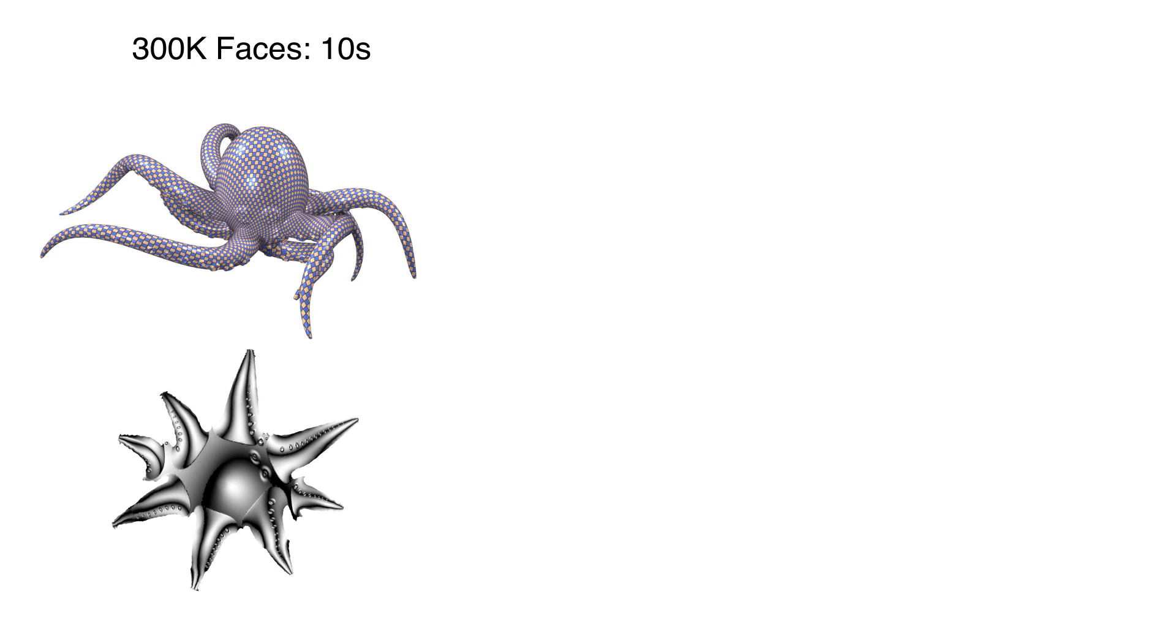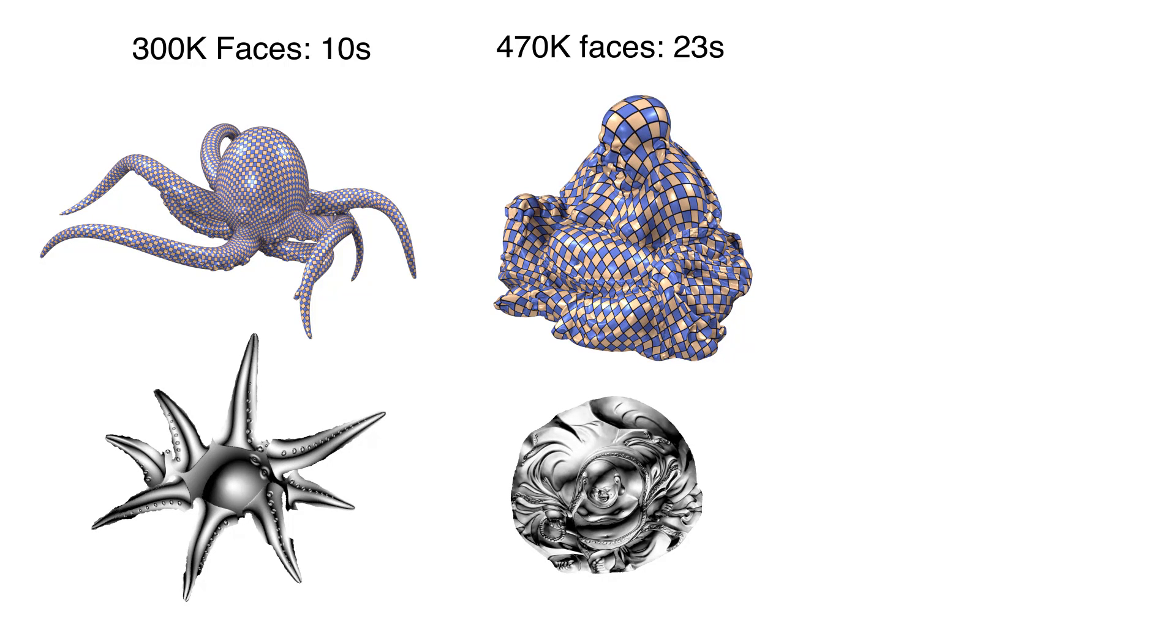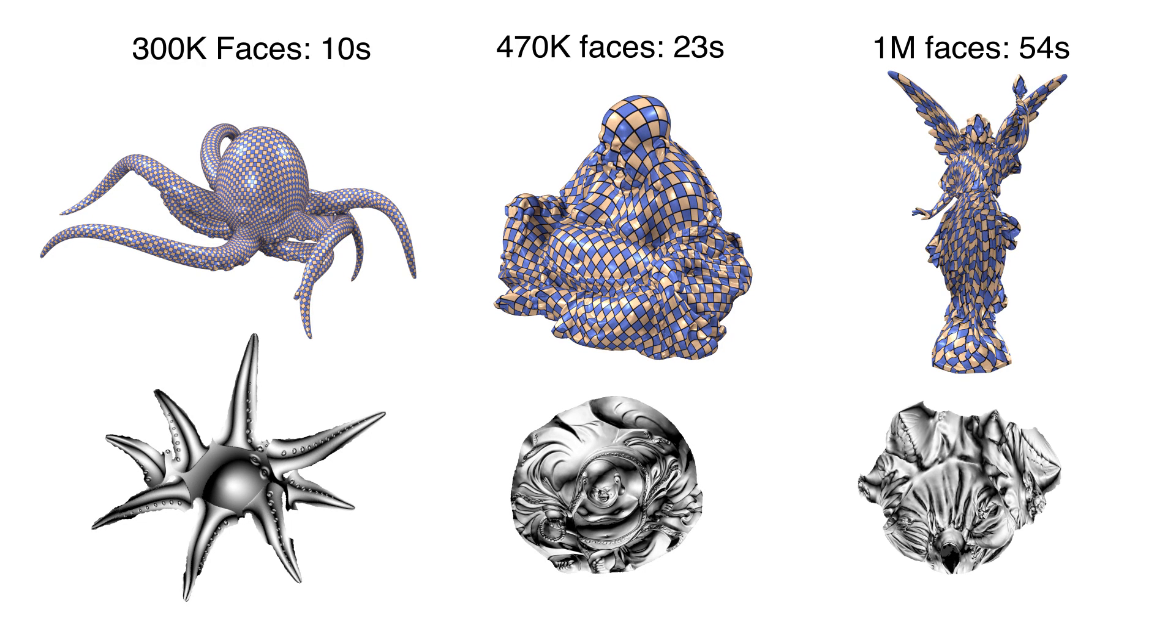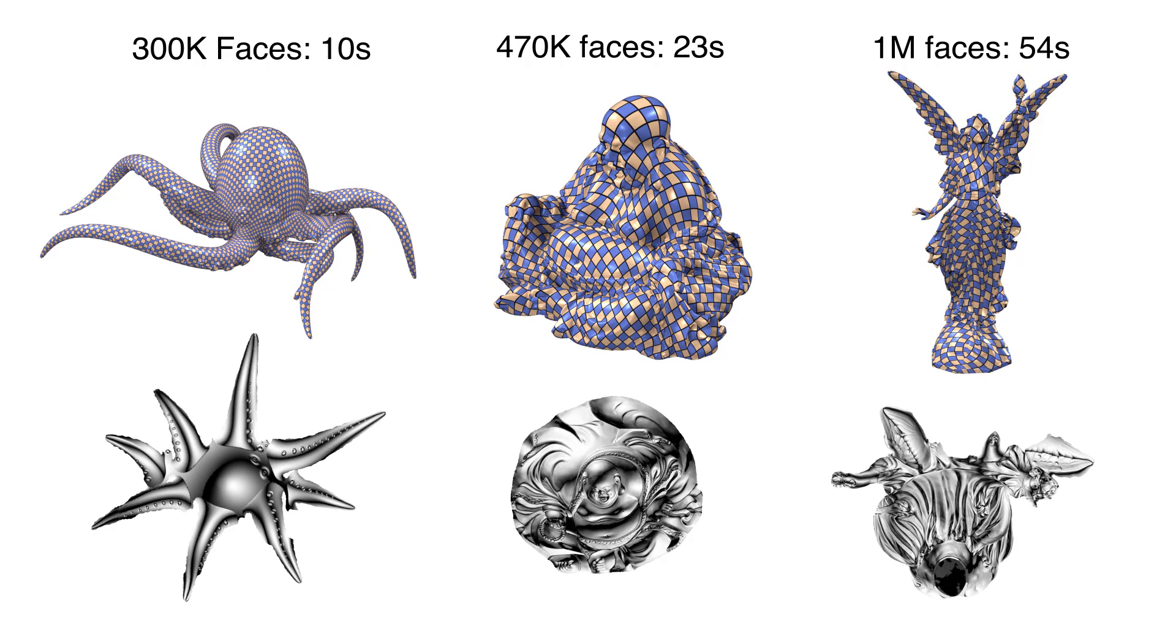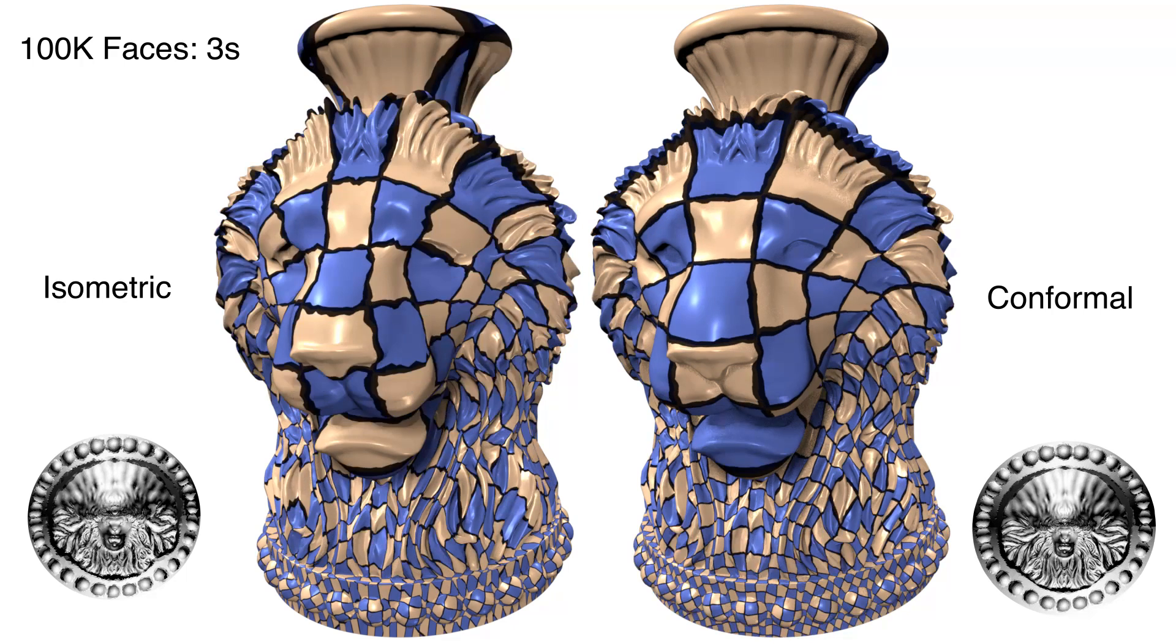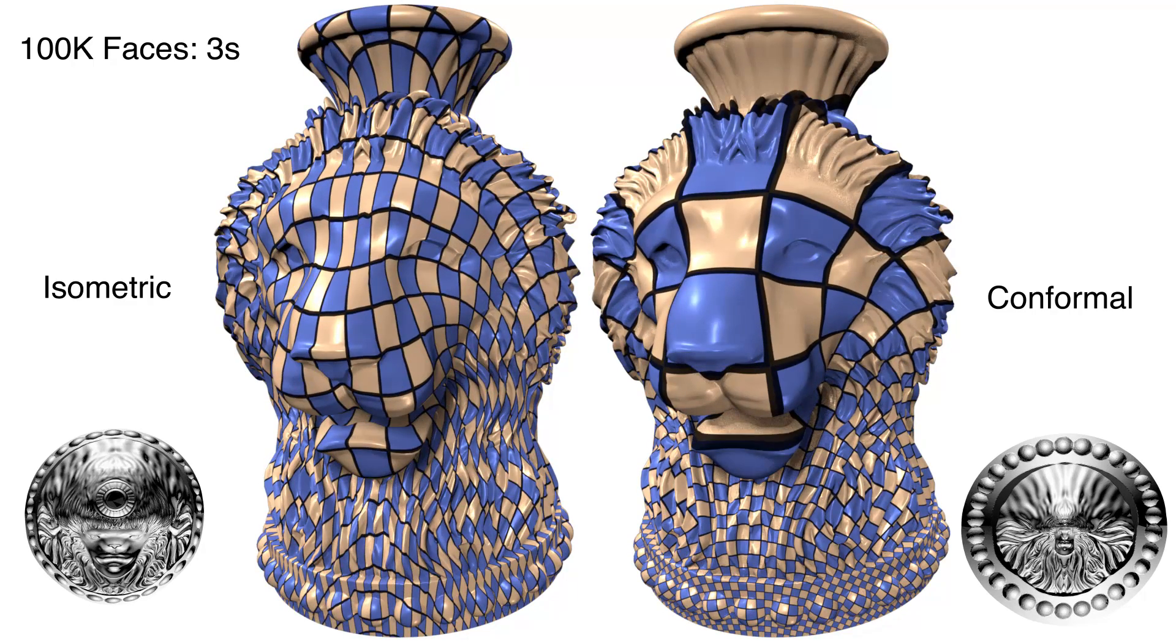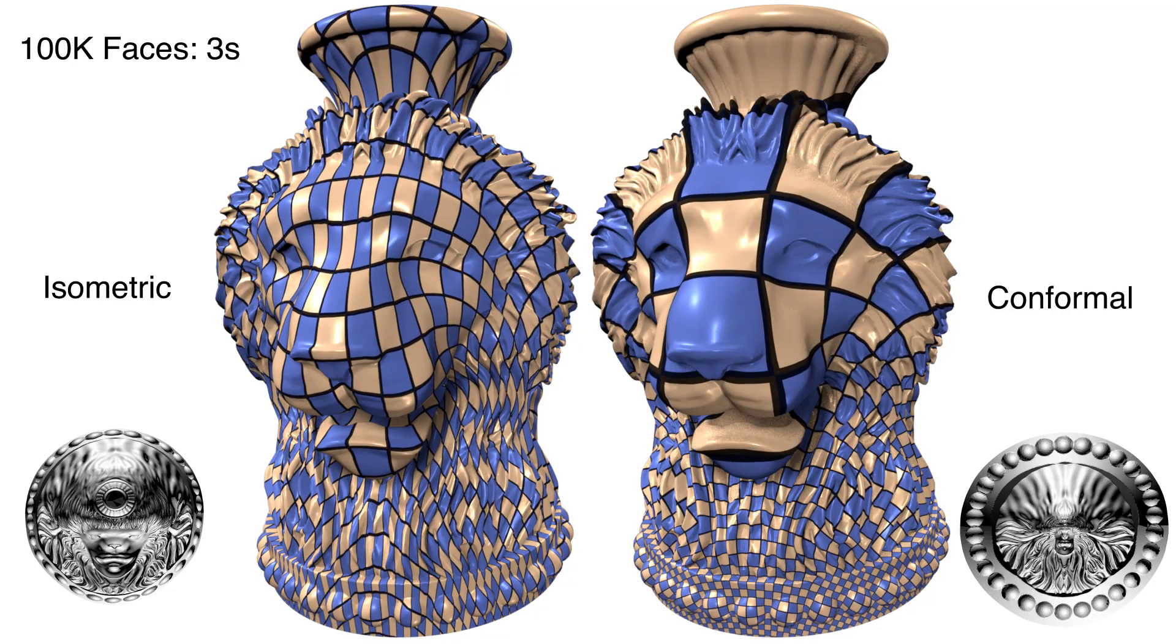Locally injective parametrization can be quickly computed for mid-size meshes that are common in the animation industry and only takes a few minutes on large datasets. The simplicity of the algorithm makes it easy to extend to different energies. With minimal changes, our method can minimize a wide range of isometric and conformal energies.